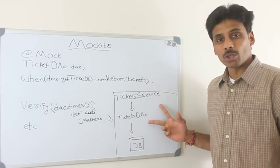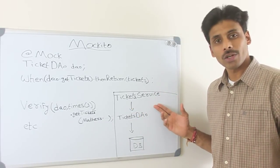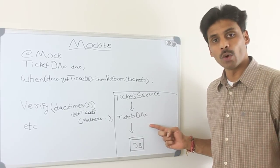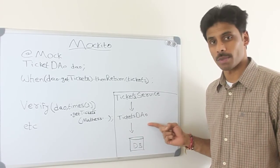At a minimum, we have these two classes in our application. One is the ticket service which holds all the business logic. And then there is a ticketing DAO, data access object, which knows how to communicate with the database and get the information.